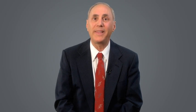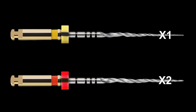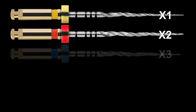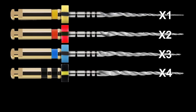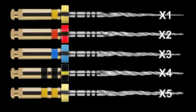The narrowest canals can usually be prepared with only the X1 and X2, which are 1704 and 2506 respectively. For larger canals, or to enhance shaping, we can add the 3007 or X3 and, if necessary, the 4006 X4 and even the 5006 X5.